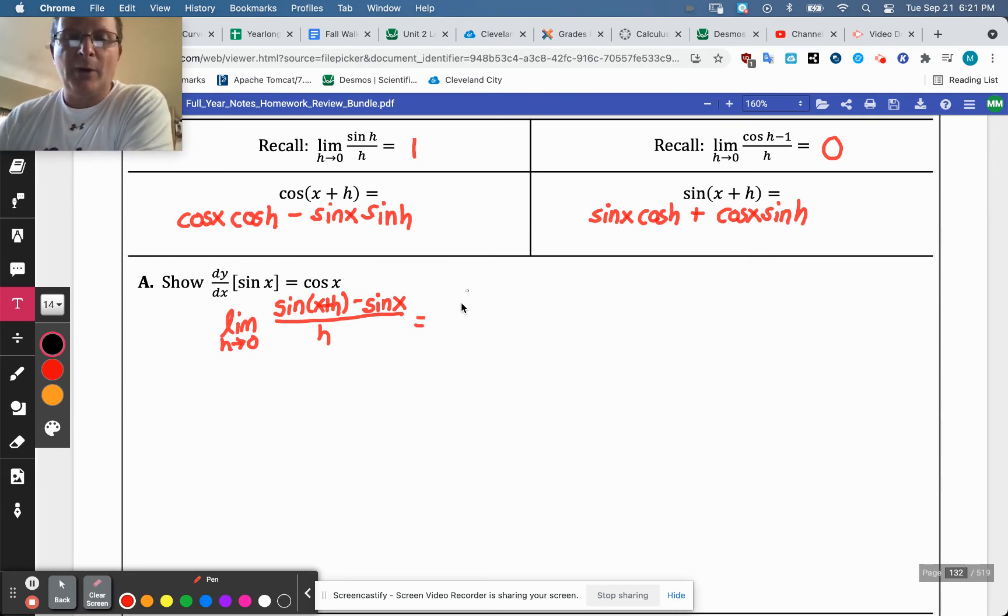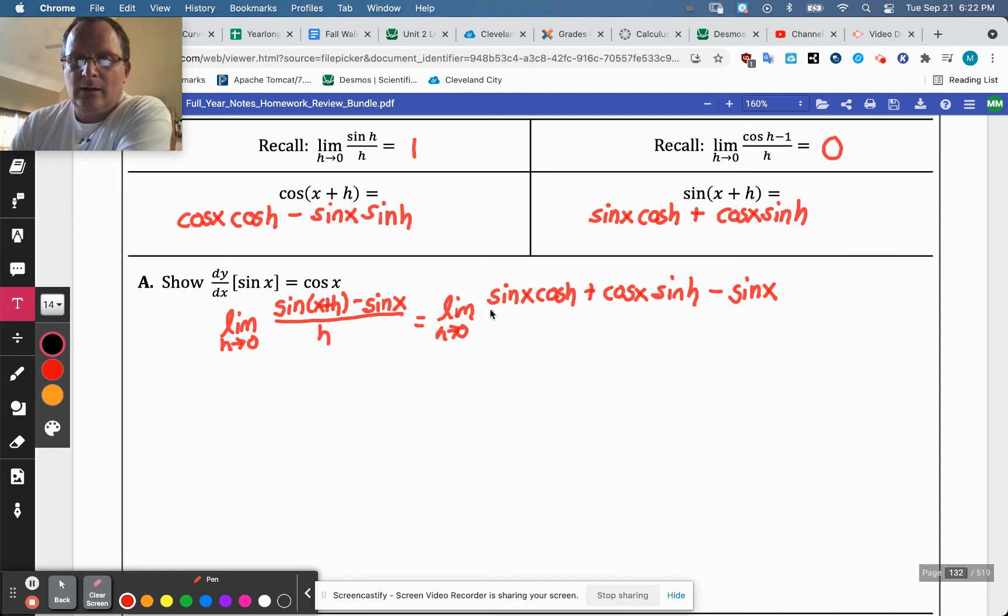But we have a trig identity for this first part. So that will be the limit as h approaches zero. These are lengthy, so I'm going to break this into two videos for you. And so I'm just copying. And then sine of x cosine h plus cosine x sine h. And then that takes care of this part, and then minus the sine x. All over h. So they all have a denominator of h.